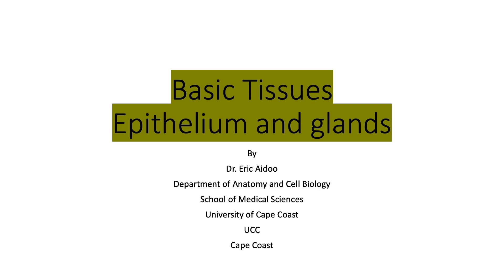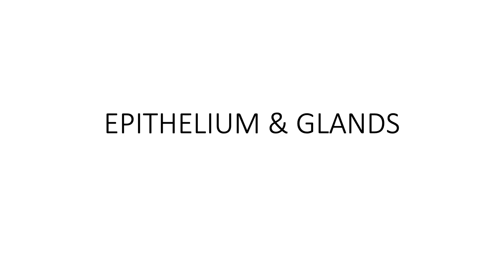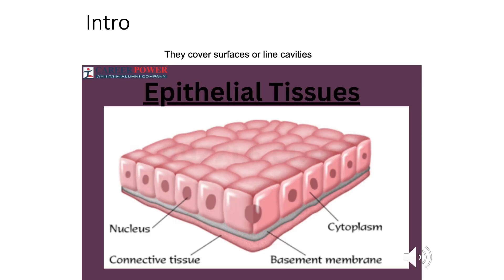Hello, welcome to the lecture on basic tissues. We are looking at epithelium and glands. Epithelial tissues are tissues that either cover or line cavities. When they cover, it means they are going to cover surfaces. When they line, they are going to line cavities or lumen. Surfaces like the skin are covered by a covering epithelium, and that of the GIT, the stomach, and the respiratory system like the trachea have linings.